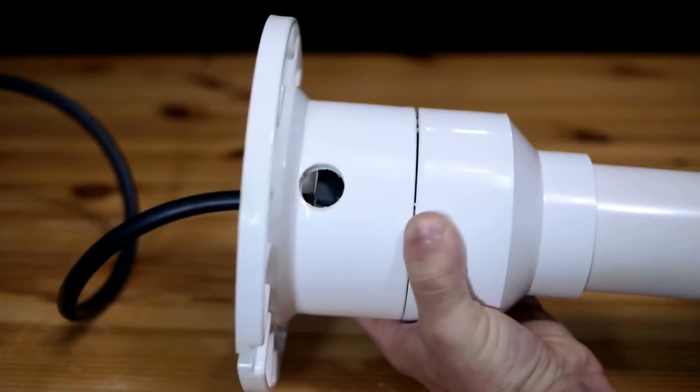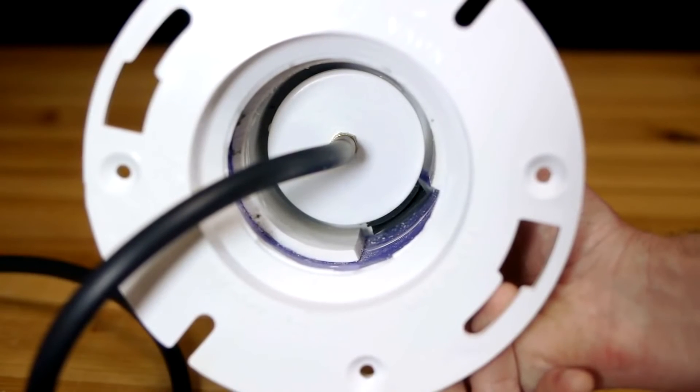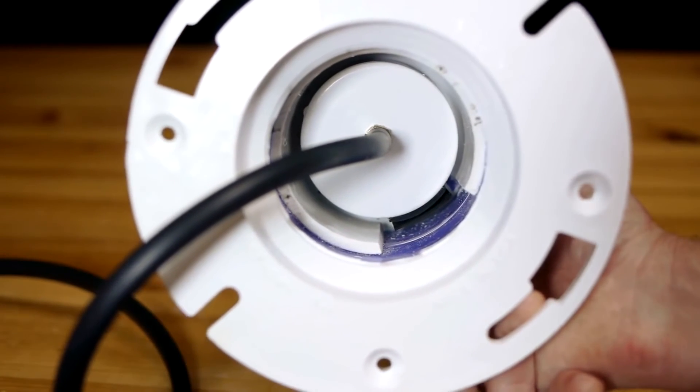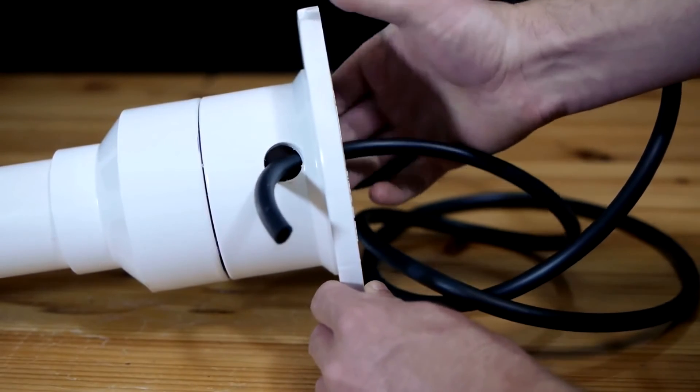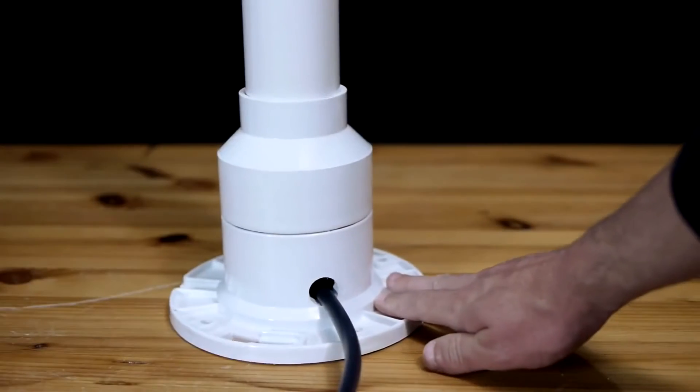It is then slid in place against the end cap, being sure that the gap on the inside lines up with the one-way valve. The base is completed by feeding the vacuum line from the brass fitting through the hole that was made for it.